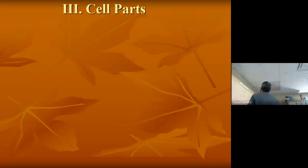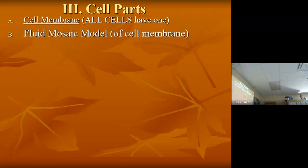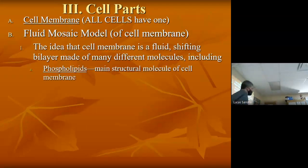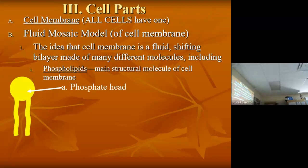Then we started on our trip through cell parts. We didn't even get all the way through cell membranes because cell membranes are complicated. The fluid mosaic model — I showed you the bubble with the swirling stuff to kind of express that it's a fluid structure. And then phospholipids, the molecule that has the two ends that are so very different. The phosphate head that is polar, so it attracts water. We call that hydrophilic.